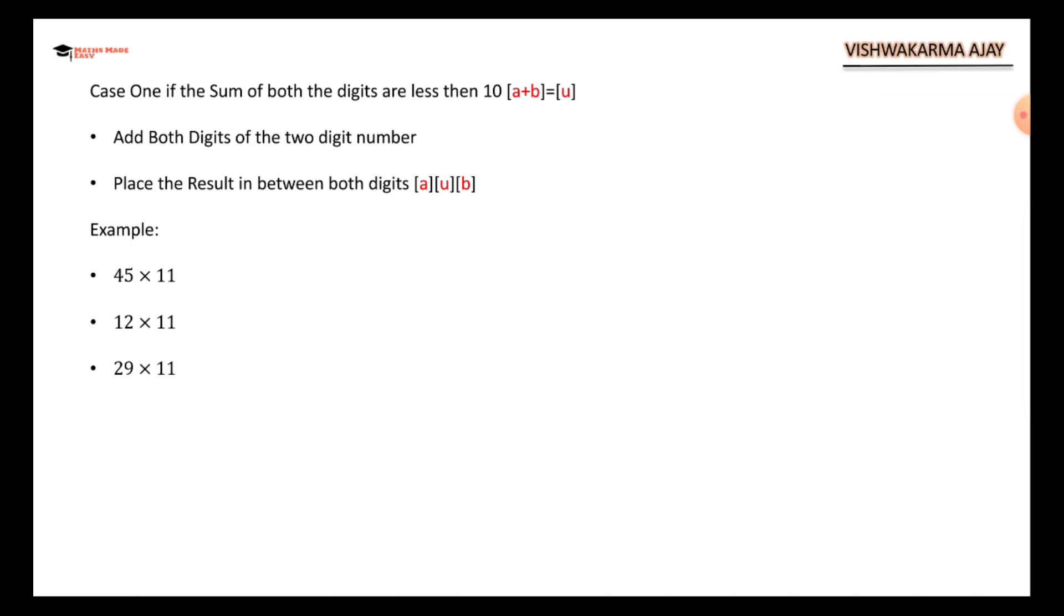There are going to be two cases. Case one: if the sum of both the digits are less than 10. Add both the digits of the two digit number and place the result between the two digits. That's it, you are done.